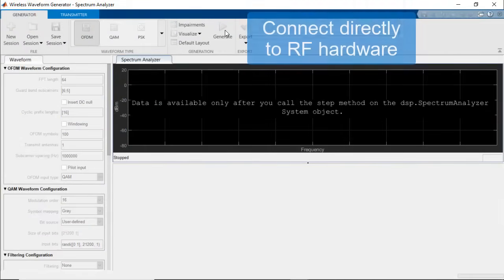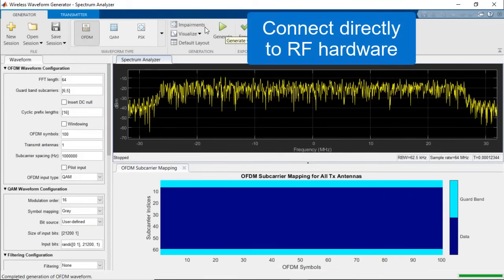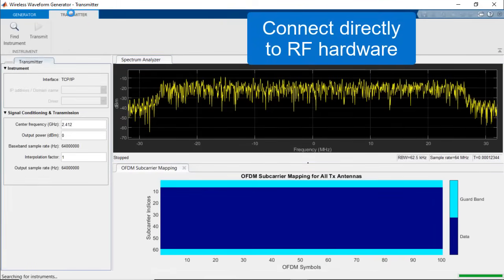You can also connect your OFDM signals directly to RF instruments for over-the-air testing using the Wireless Waveform Generation app.